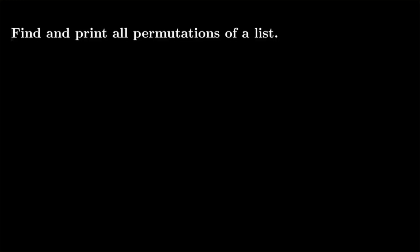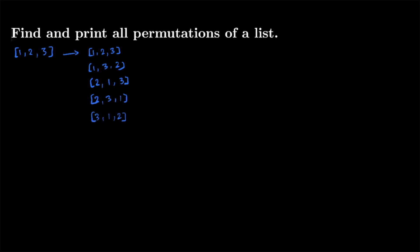Let's say I'm given a list and I want to print all the permutations of that list. For example, if I have one two three, then the permutations I want to print are: one two three, one three two, two one three, two three one, three one two, and three two one. They don't have to be in this order — they're basically all the possible arrangements, so any element can be at any location.